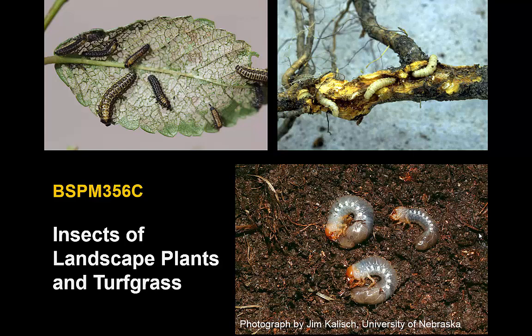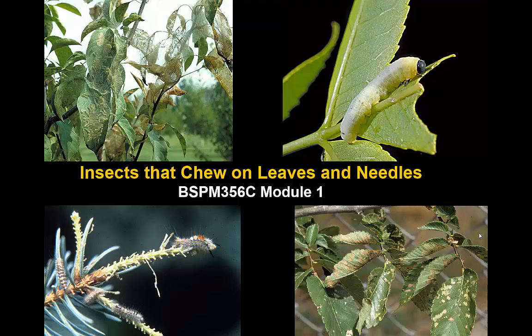Welcome to the third section of Horticultural Entomology. During the next five weeks we're going to talk about the kinds of insects and mites that you find on ornamental plants - the kinds of plants we put in landscapes like trees, shrubs, flowering plants, as well as turf grass. During the first week the focus will be on those that are going to chew on the leaves and needles: defoliators.